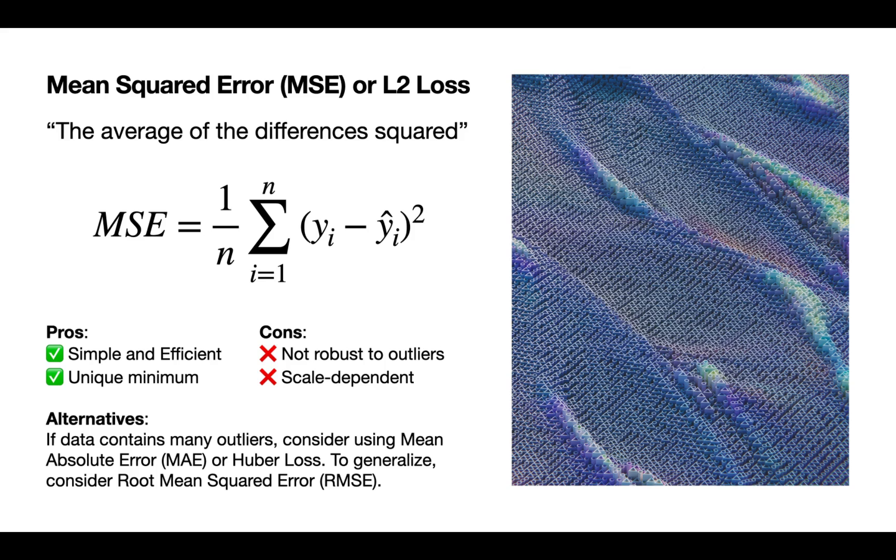The pros of this one is that it's simple and efficient, and you have one unique minimum which you can optimize towards. But the cons is that it's not robust to outliers, and this is because of the squared term. Because we are squaring the distance, if you have one data point which is really off, that distance is really going to affect the loss, which makes it not robust to outliers. It can explode the loss and is also scale dependent.